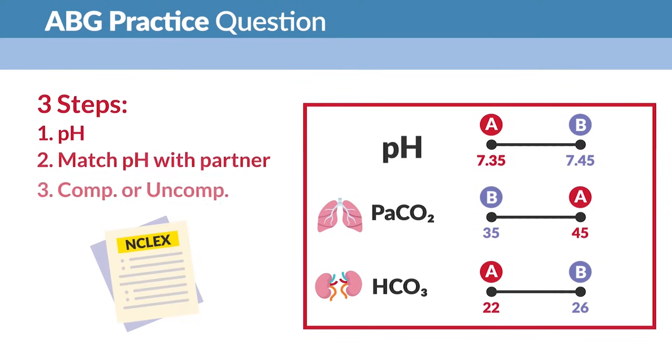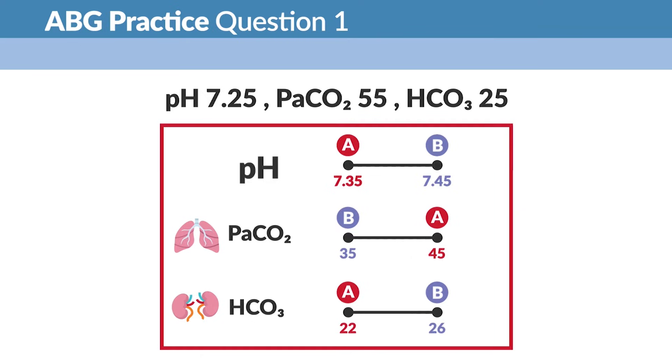So using our three steps, let's break this down. ABG practice question number one: here we have a pH of 7.25, a PaCO2 of 55, and an HCO3 of 25. So using our marching band suit, let's break this down. Step number one, starting with pH because it's primary.